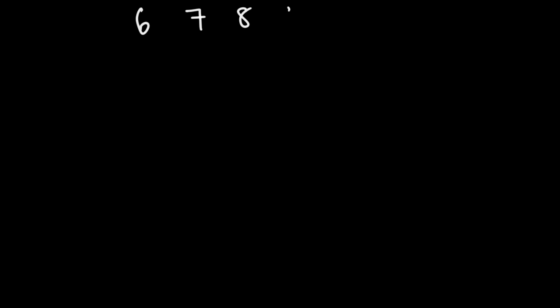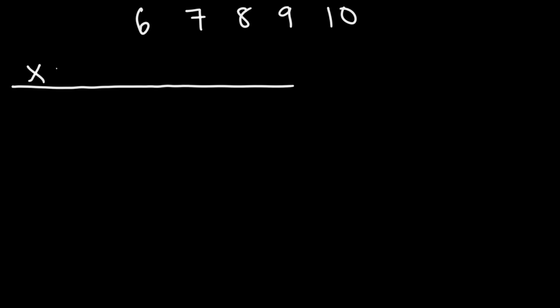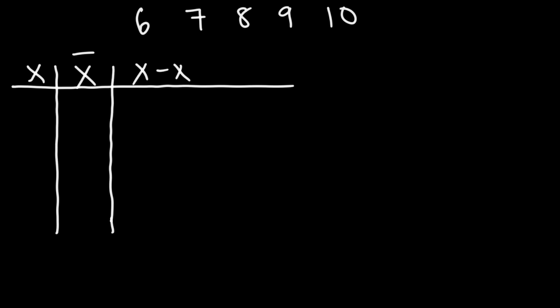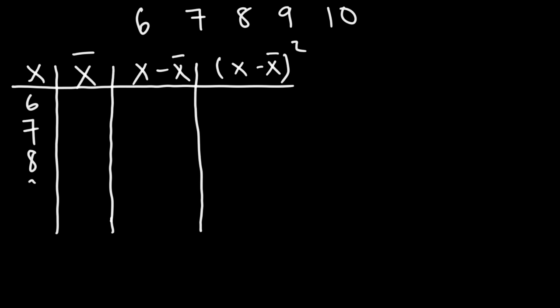Let's talk about how to calculate the variance and the standard deviation for the first list of numbers. We're going to make a table. x is going to represent the data values, x-bar will represent the mean of that data, then x minus x-bar — the data values minus the mean — will tell us the deviations. And in the next column we're going to have the square of the deviations. The numbers are 6, 7, 8, 9, and 10.